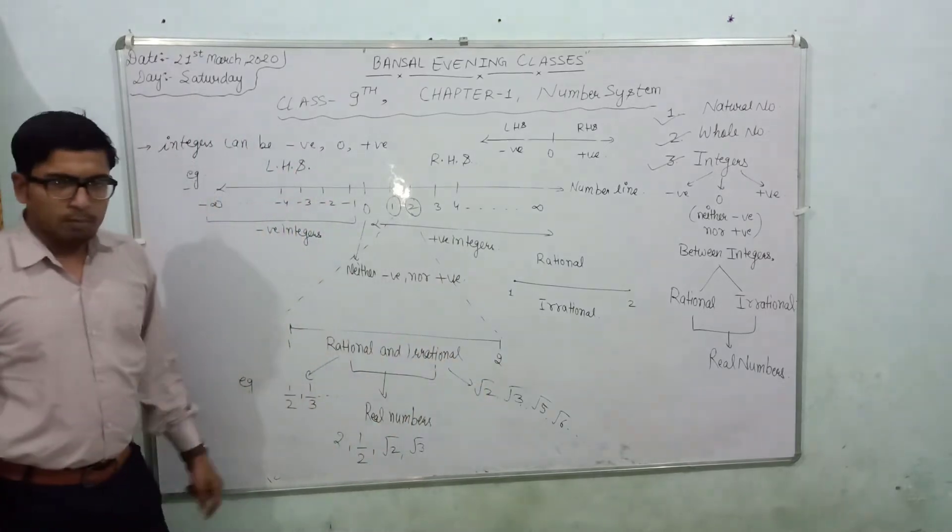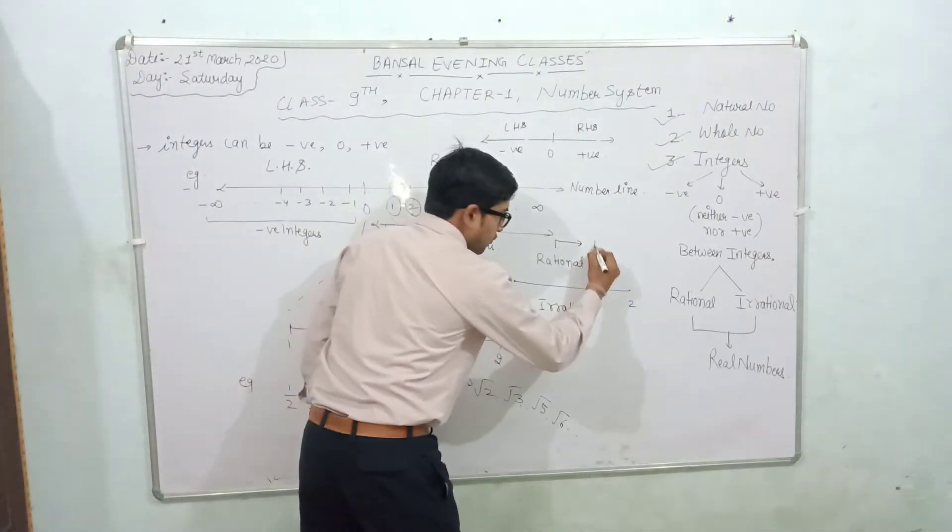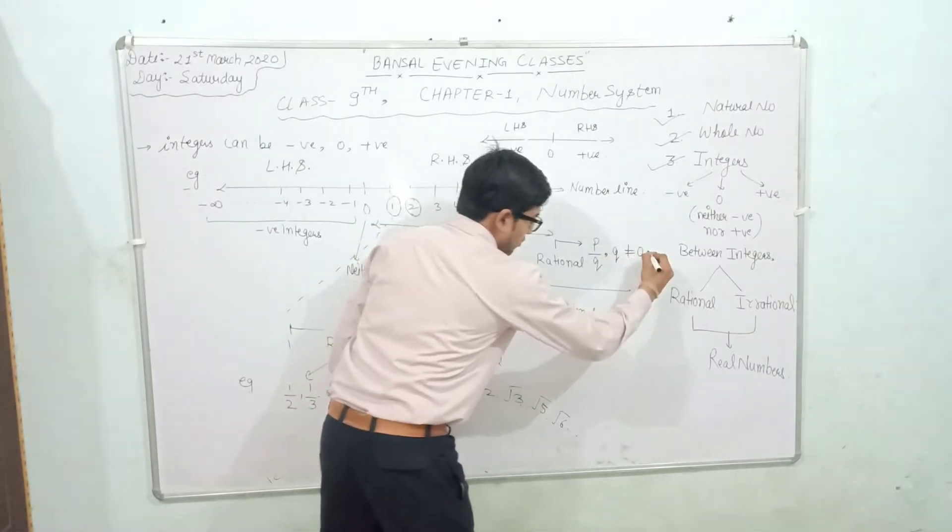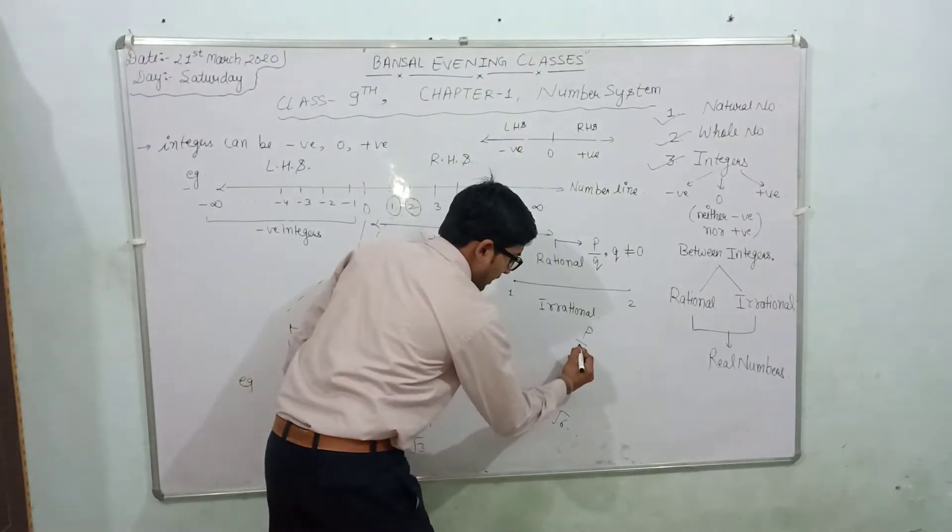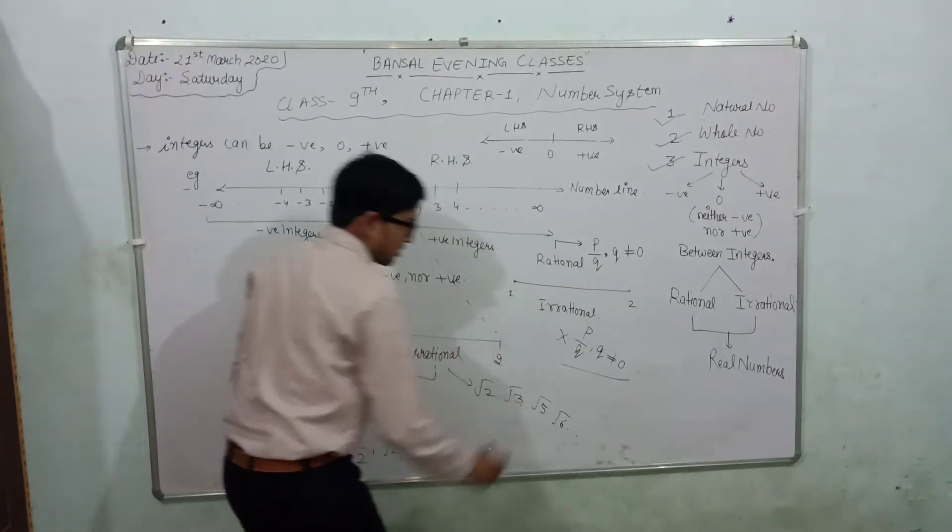Given a proper definition, rational numbers are both numbers which are written in the form of P by Q, and Q should not equal to zero. And those numbers which are not written in the form of P by Q, where Q not equal to zero, are known as irrational numbers.